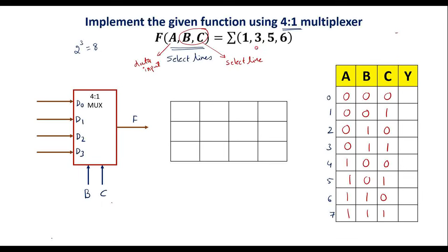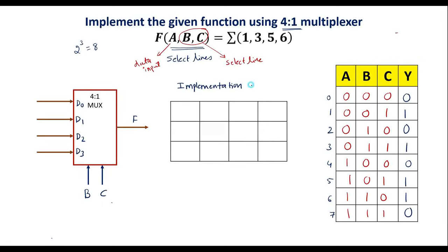According to the function Σ(1, 3, 5, 6), these are the minterms, so the output is high (1) for minterms 1, 3, 5, and 6; for all other cases it will be 0. Among the 3 variables, I will use b and c as select lines and a as data input. To implement this, we have to write an implementation table.